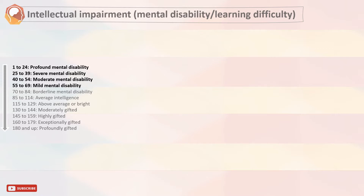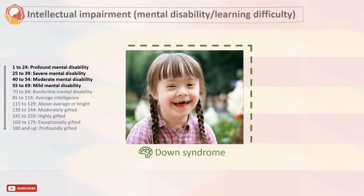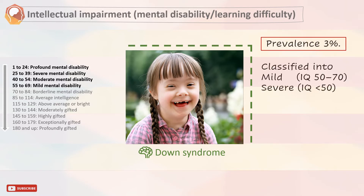Many cases lack a well-defined etiology, but there are some subgroups where the cause or diagnosis is known. Some of which would be Down syndrome or Fragile X syndrome, caused by trisomy of chromosome 21, cerebral palsy, birth anoxia, meningitis, rubella, autism, and microcephaly. It has a prevalence of 3%.